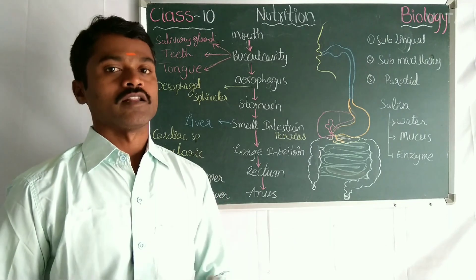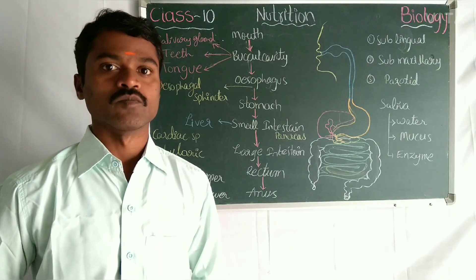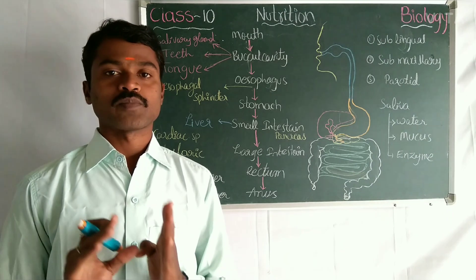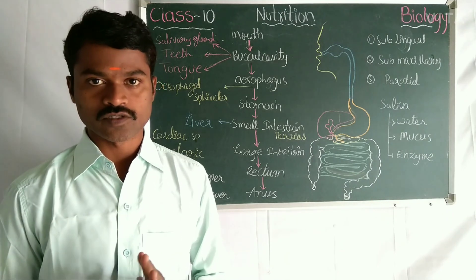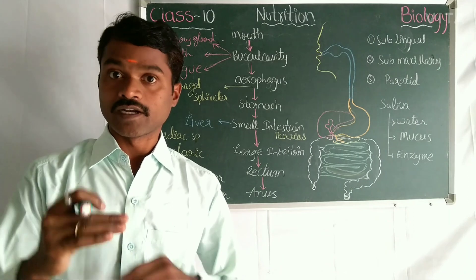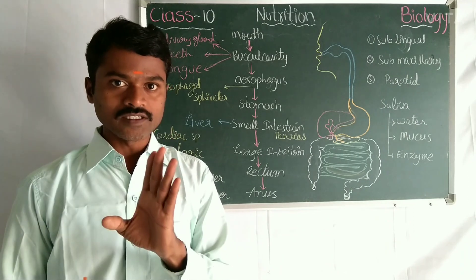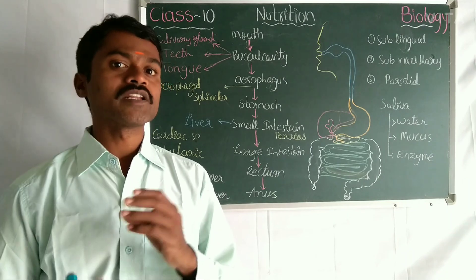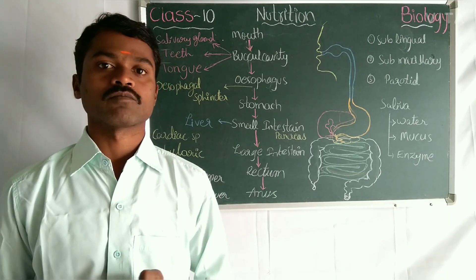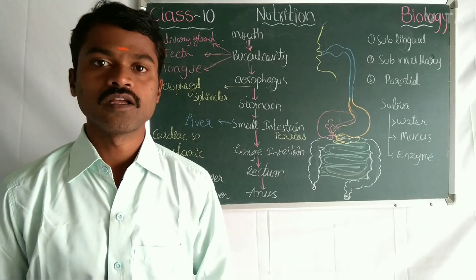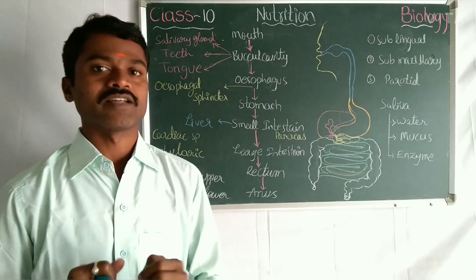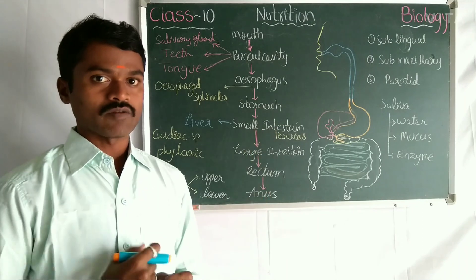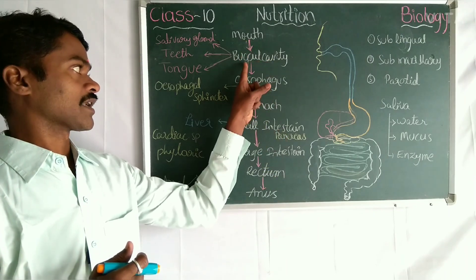Let's start the human digestive system. Mammals have a complex, well-developed digestive system. A well-developed digestive system means one that has a minimum of seven parts. Let's see how many parts we have in our digestive system: mouth, buccal cavity, oesophagus (food pipe), stomach, small intestine, large intestine, rectum, and anus.